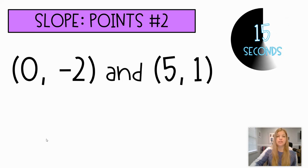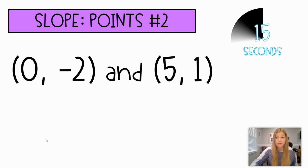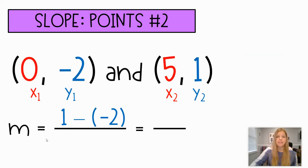Okay, so you're trying this one out, 0, negative 2, and 5, 1. Subtract your y's, over subtracting your x's, and then you are done. So it's 1 minus a negative 2, over 5 minus 0. 1 minus negative 2 is 3. 5 minus 0 is 5, and that's it. Your slope is 3 fifths. Try another one.